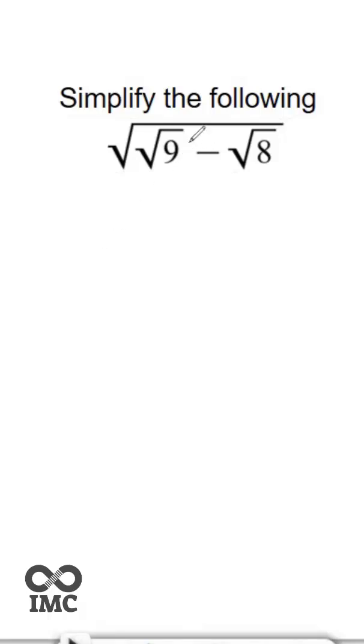Here we can say square root of 9 represents 3 and square root of 8 will be 2 root 2. Why? Square root of 8 means square root of 4 into 2, so square root of 4 will be 2, so 2 root 2.